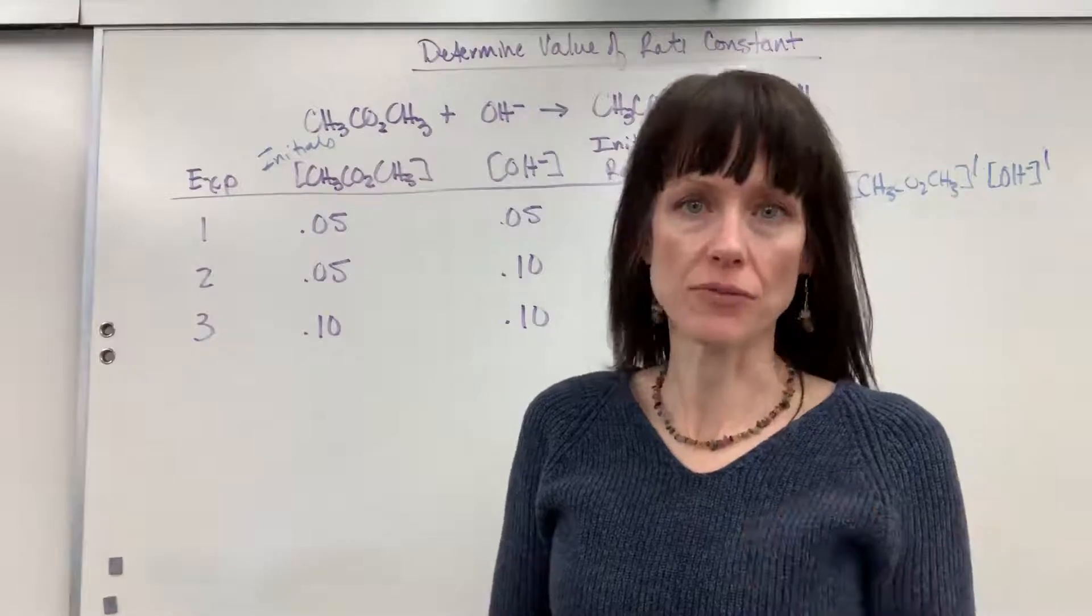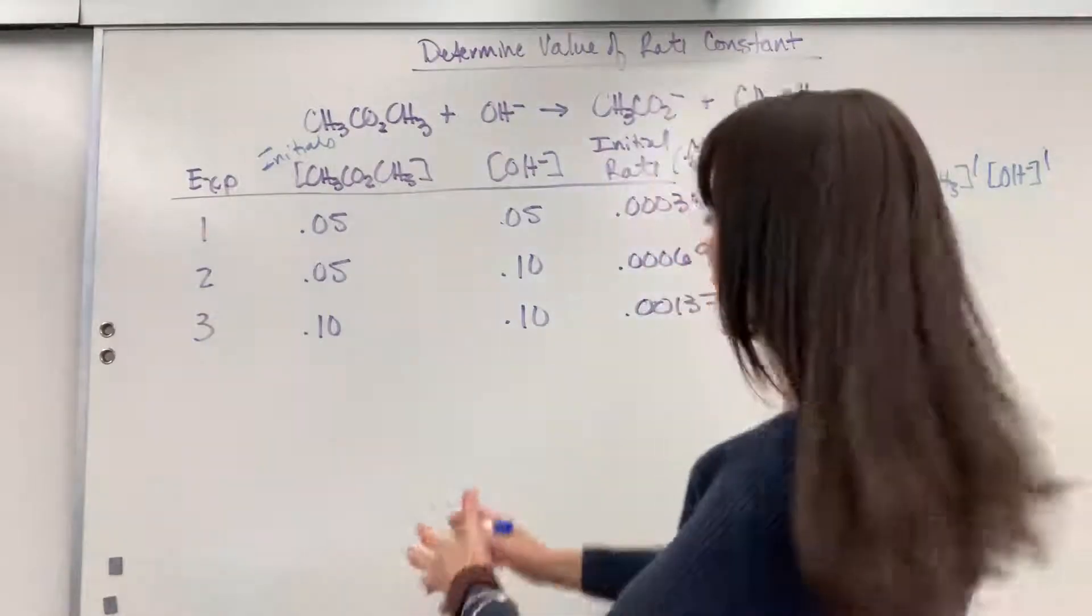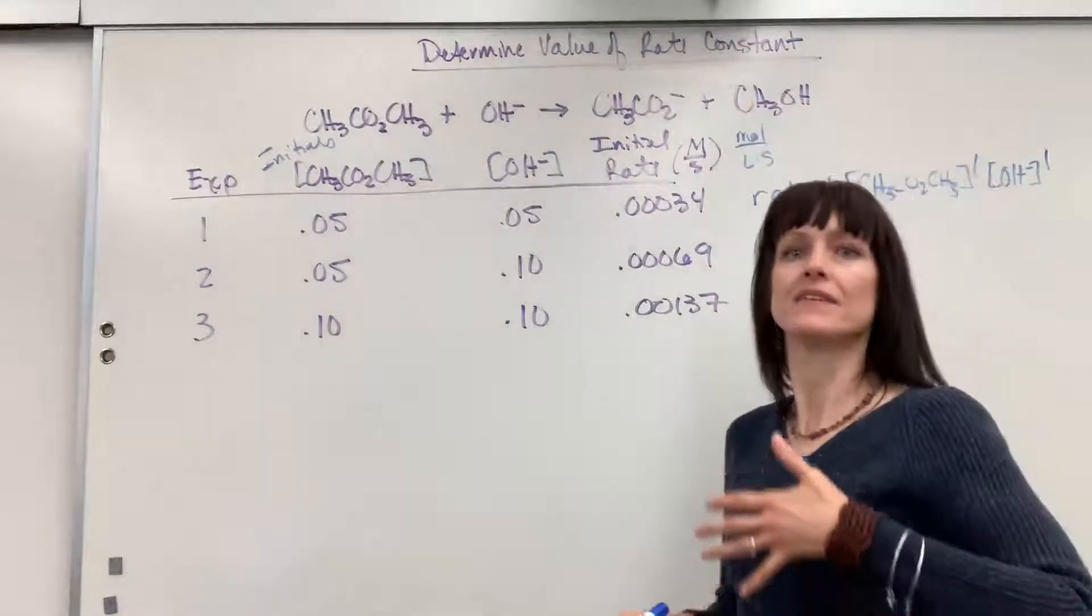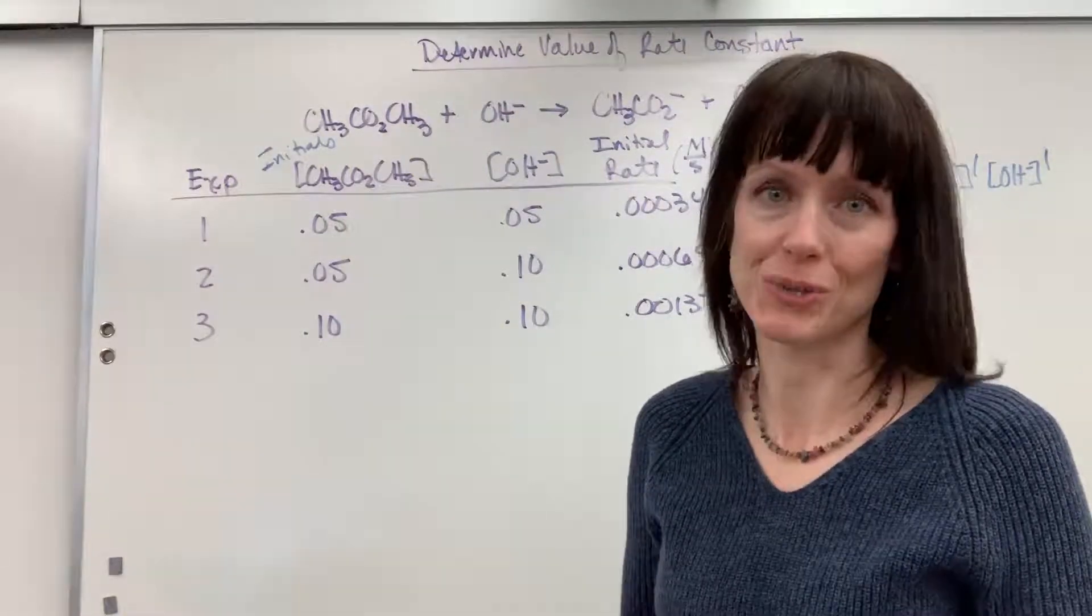This is a very common type of question: here is a set of data, determine the rate law, and then the second question is determine the rate constant and unit.